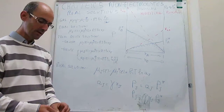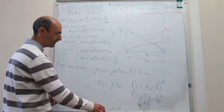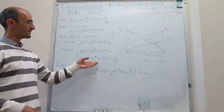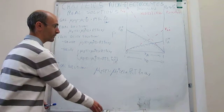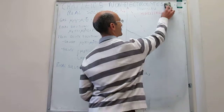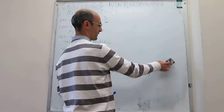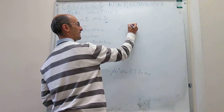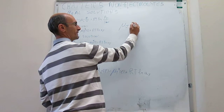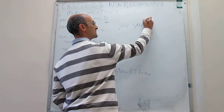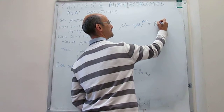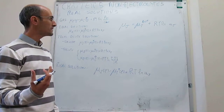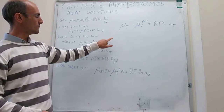So we can write a universal expression for the chemical potential that satisfies all of these cases. The chemical potential of any substance J, regardless of phase, is going to be equal to the chemical potential of a reference plus RT times the natural log of the activity A sub J. We can then look at how this maps into all the specific cases.